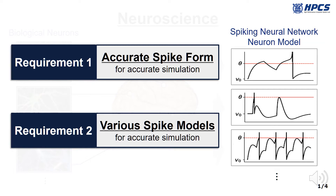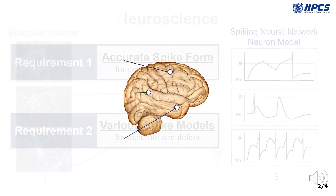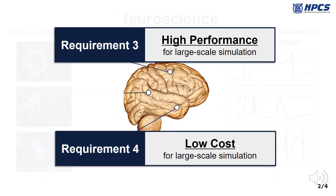Second, it has to support various spiking models as human neurons. And of course, it must be fast and scalable to simulate a large network.